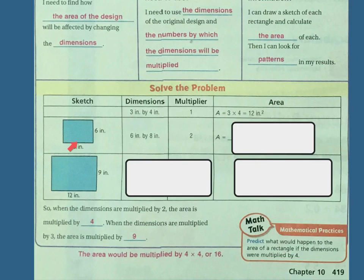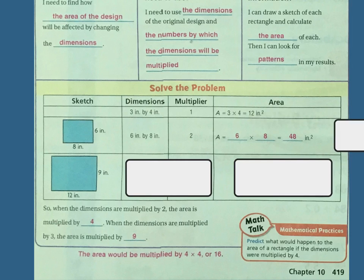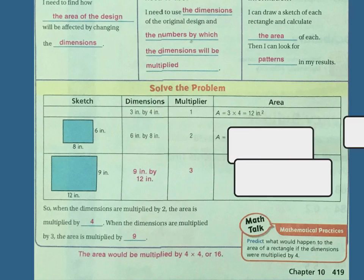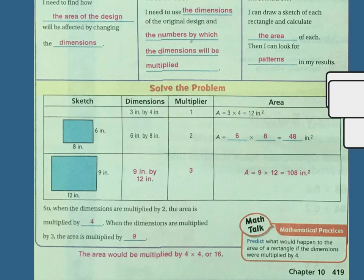So if I have an 8 by 6 square, that's 6 times 8, and my multiplier is 2. So my area is going to be 6 times 8, which is 48. If I do the multiplier of 3, then now my area is going to be 12 times 9. So area equals 12 times 9, which is 108. So when the dimensions are multiplied by 2, the area is multiplied by 4, and when the dimensions are multiplied by 3, the area is multiplied by 9.